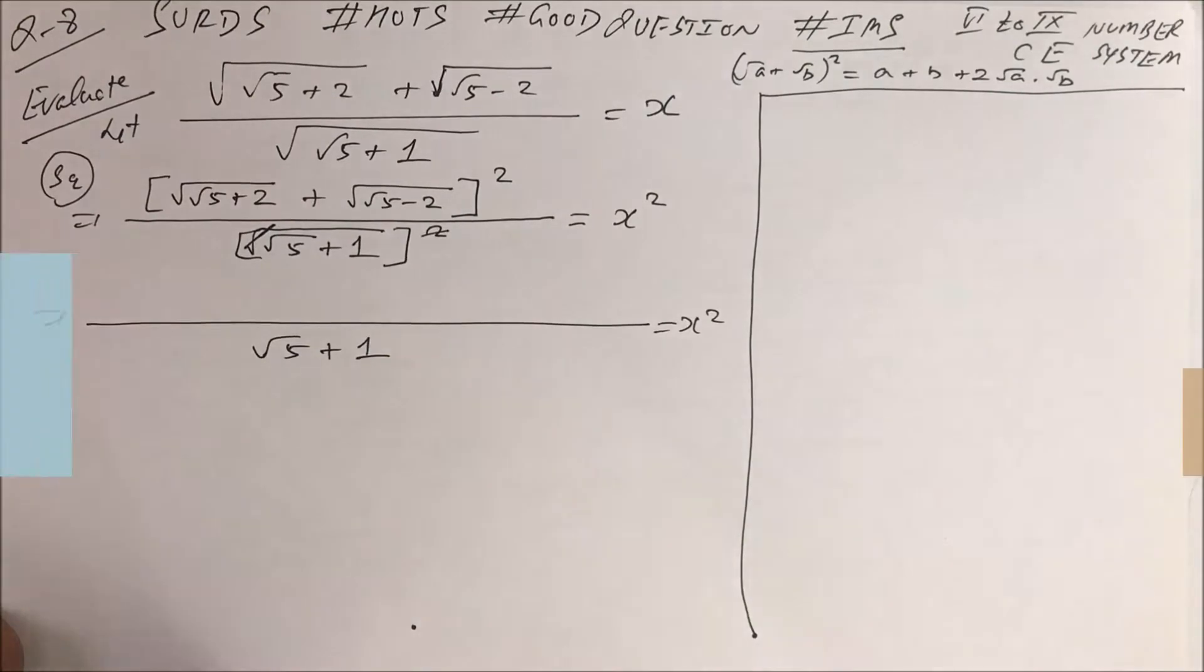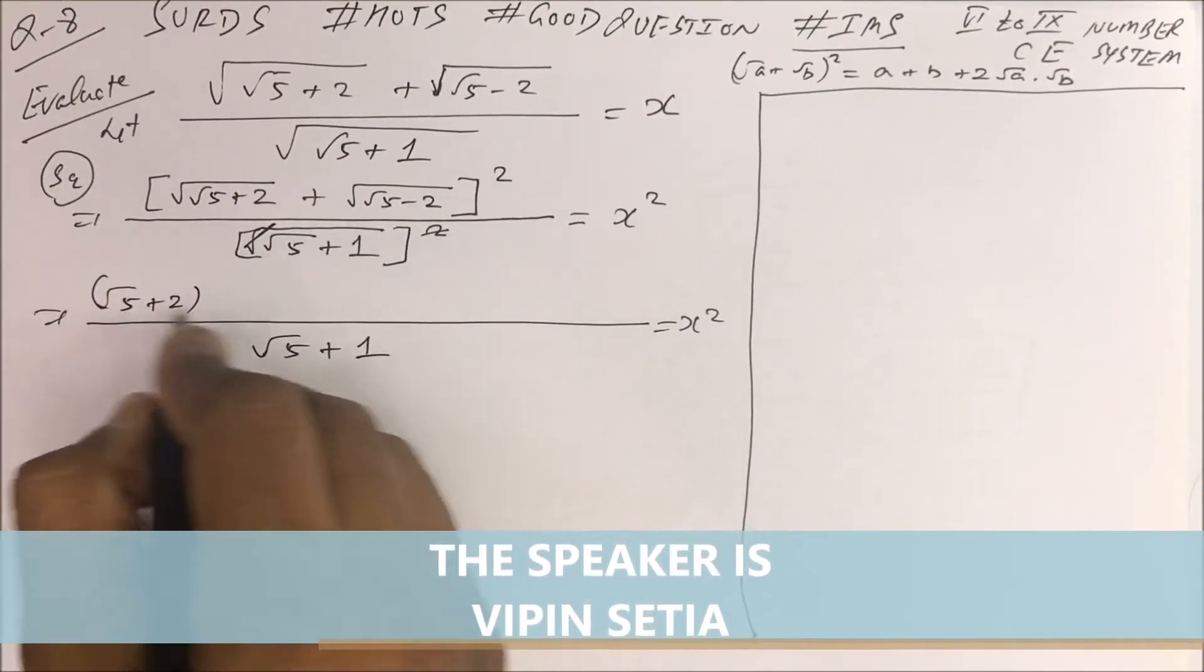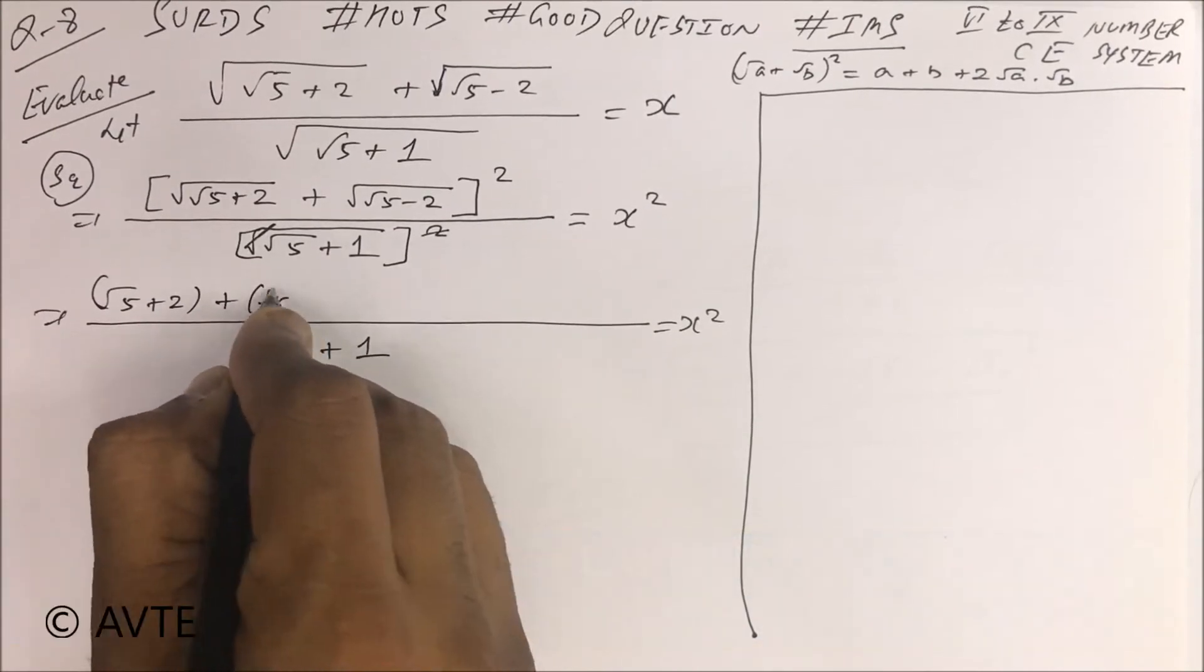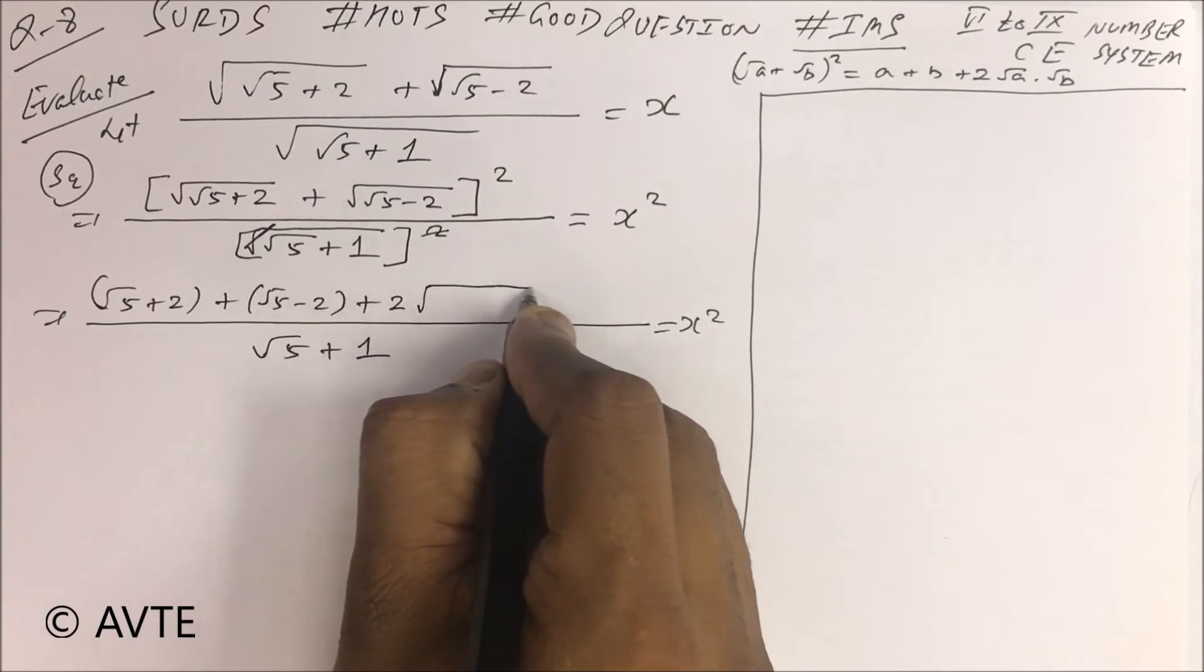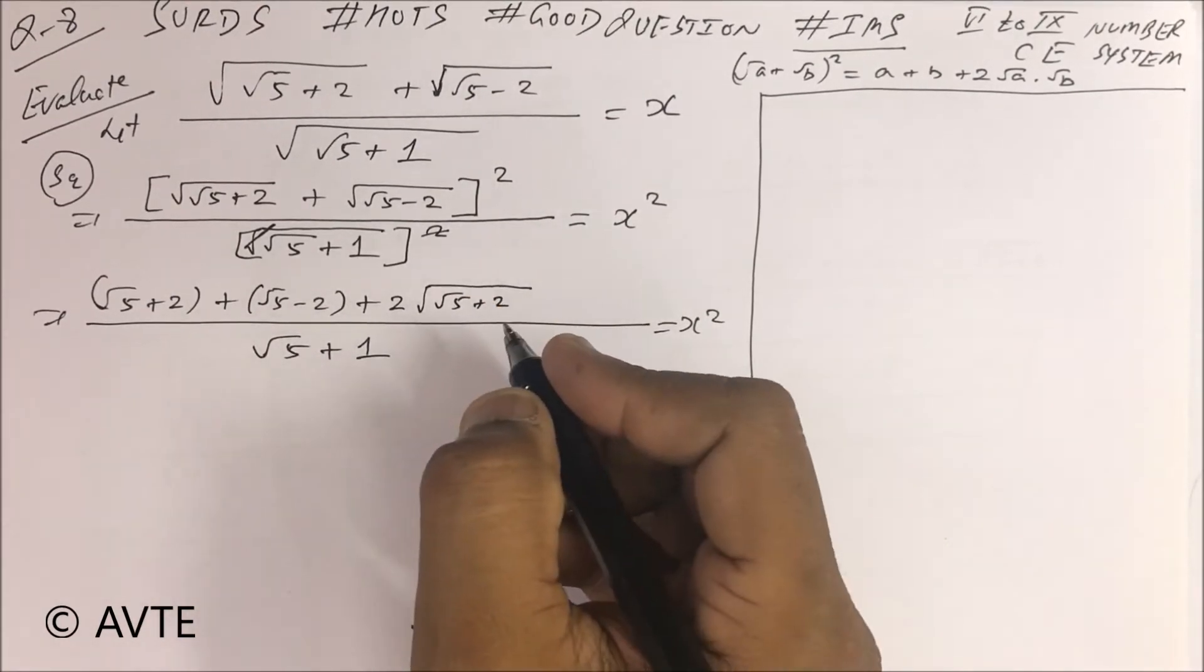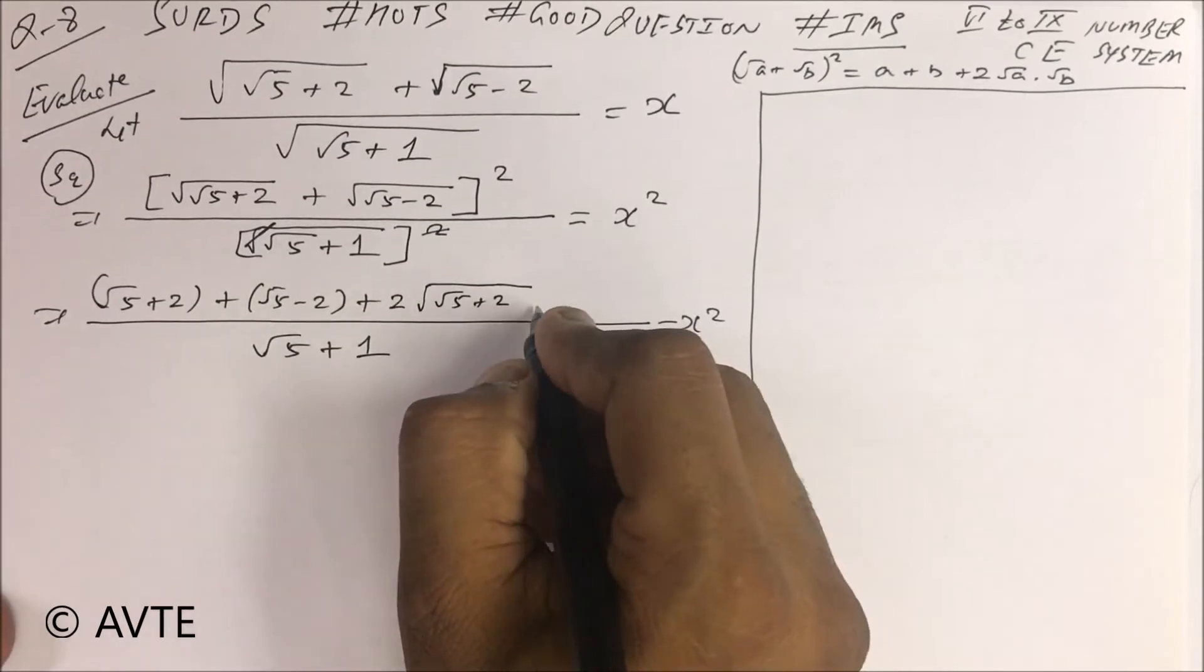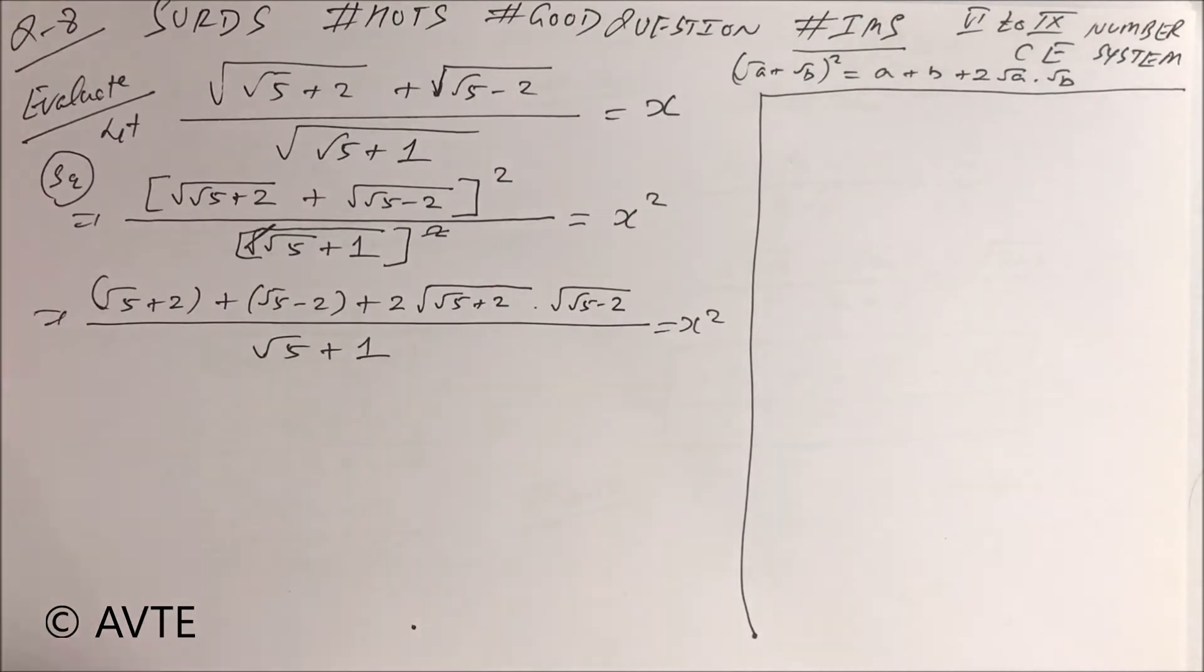Got it? So this is √5 + 2 plus √5 + 2 plus 2 times (√5 + 2) into (√5 - 2). Got it?